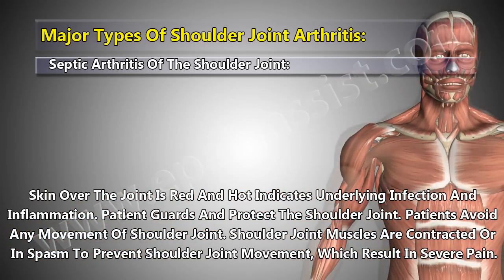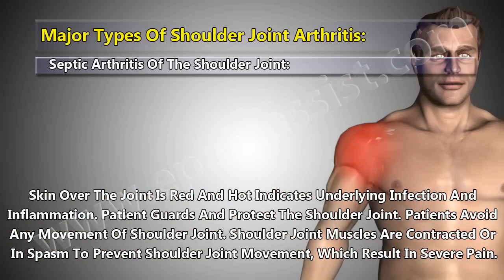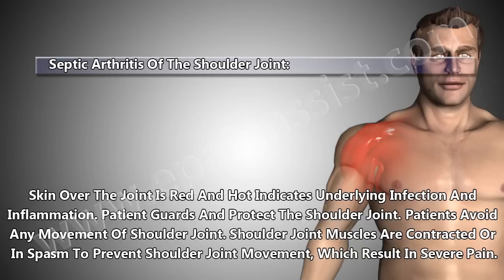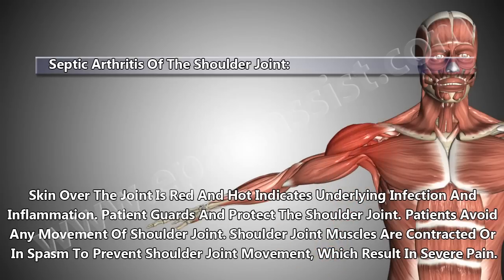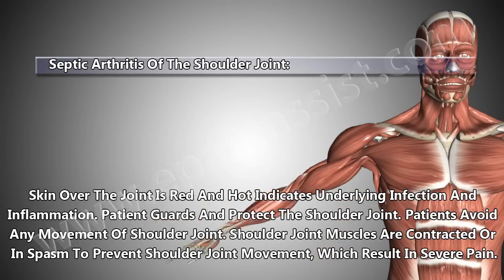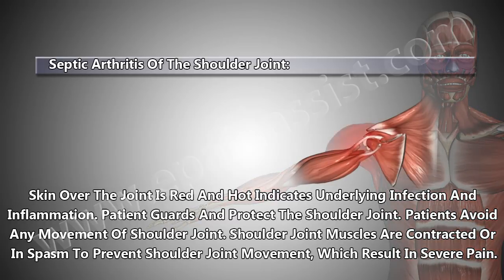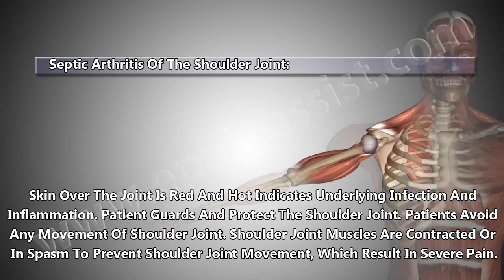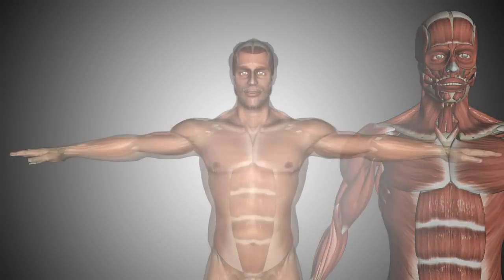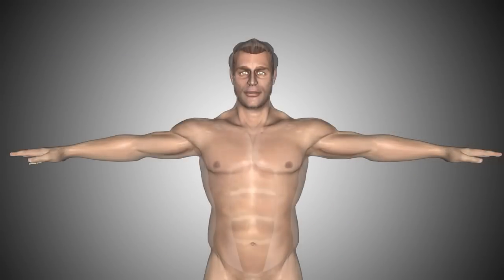Skin over the joint is red and hot, indicating underlying infection and inflammation. The patient guards and protects the shoulder joint, avoiding any movement. Shoulder joint muscles are contracted or in spasm to prevent shoulder joint movement, which results in severe pain.